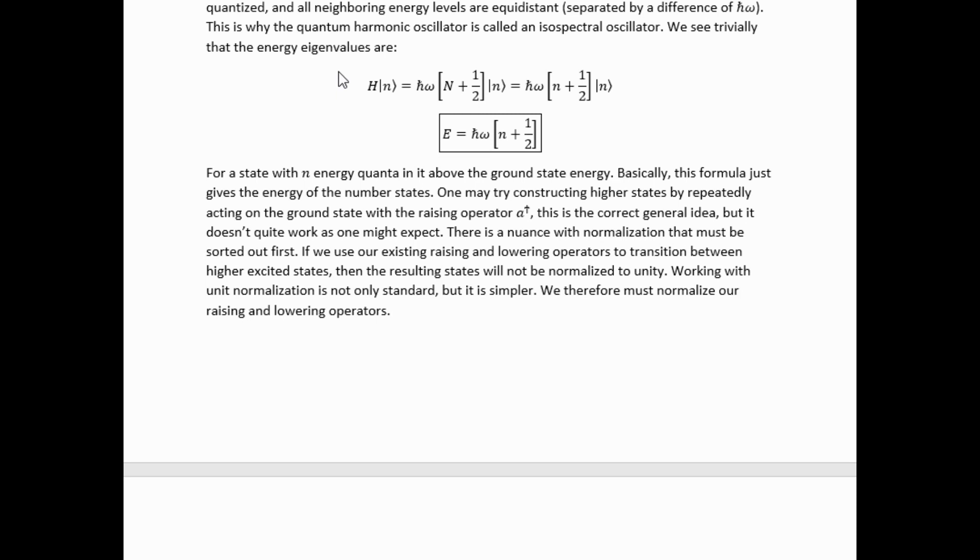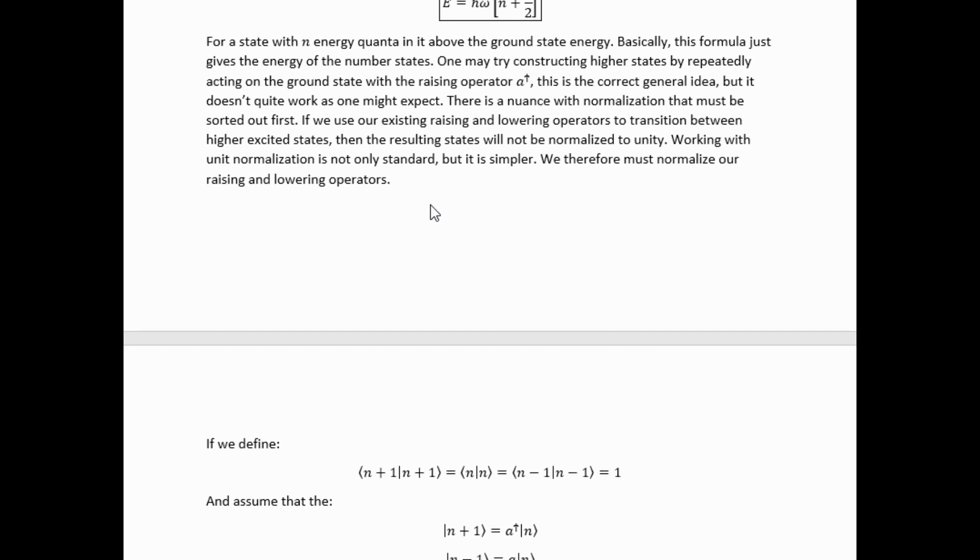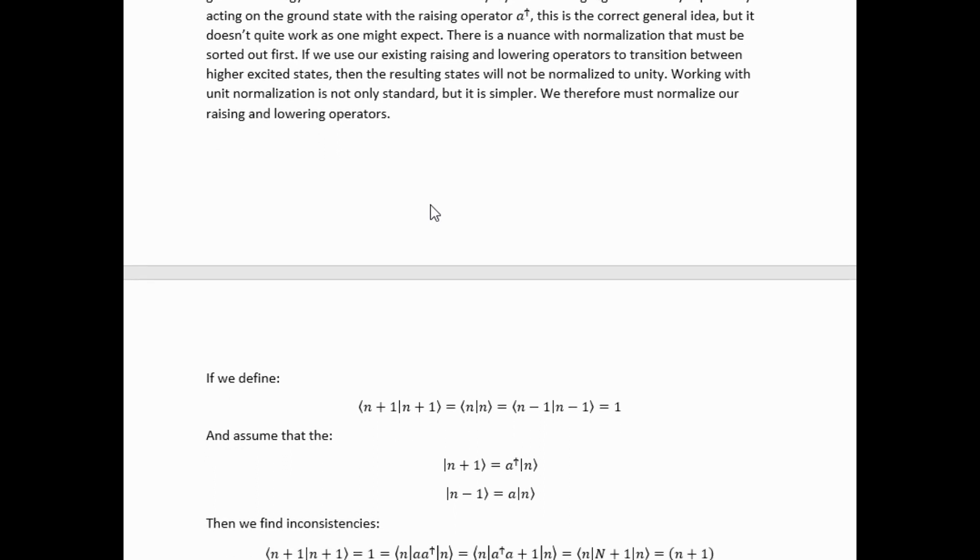We see trivially that the energy eigenvalue of an arbitrary number state is given by this formula. One may try constructing higher excited states by repeatedly acting on the ground state with the raising operator. This is the correct general idea, but it doesn't quite work as one might expect. There is a nuance with normalization that must be sorted out first. If we use our existing raising and lowering operators to transition between higher excited states, then the resulting states will not be normalized to unity. Working with unity normalization is not only standard, but it's a lot easier. We therefore must normalize our raising and lowering operators before using them to build and transition between higher excited states.